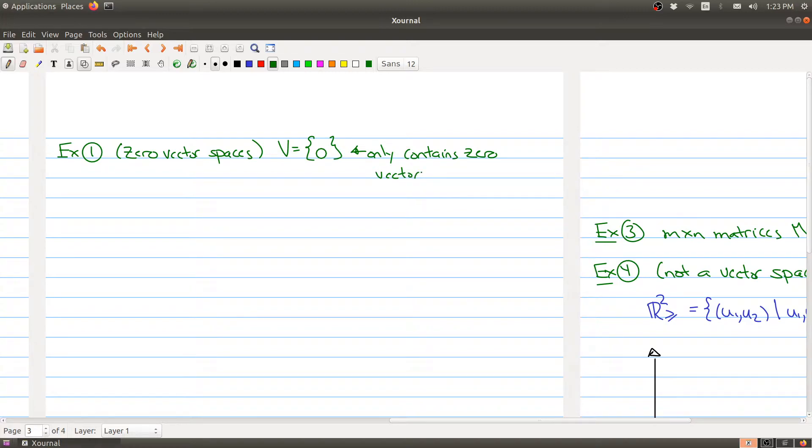This set is sometimes called the zero vector space, and it's clear what elements belong to the set. There's only zero.